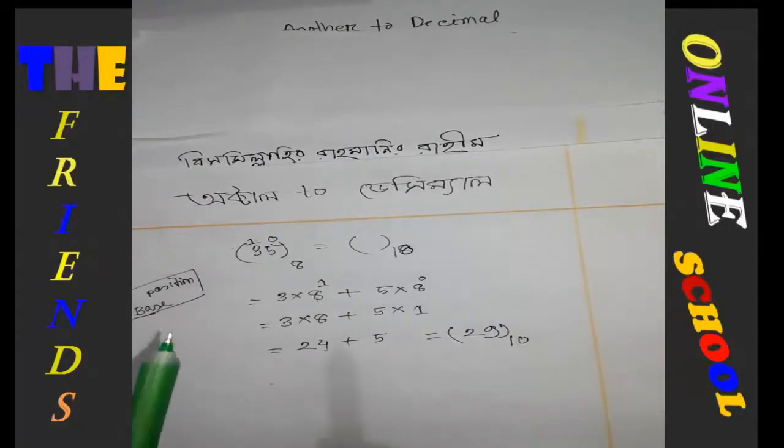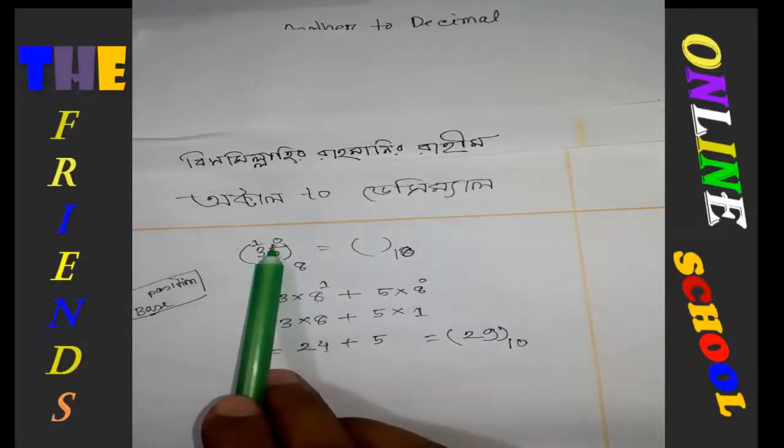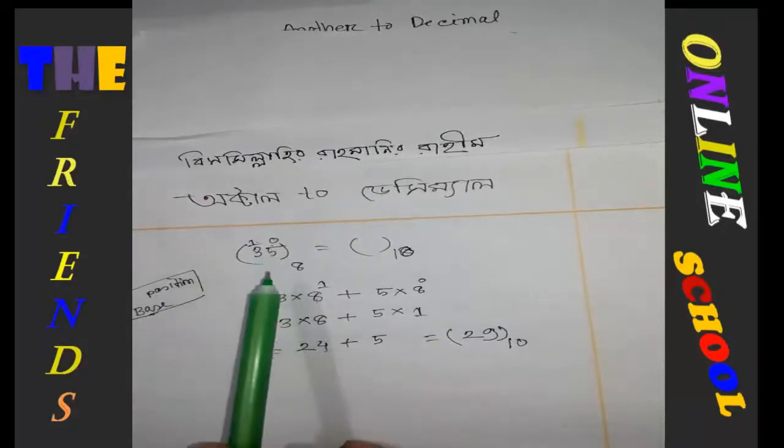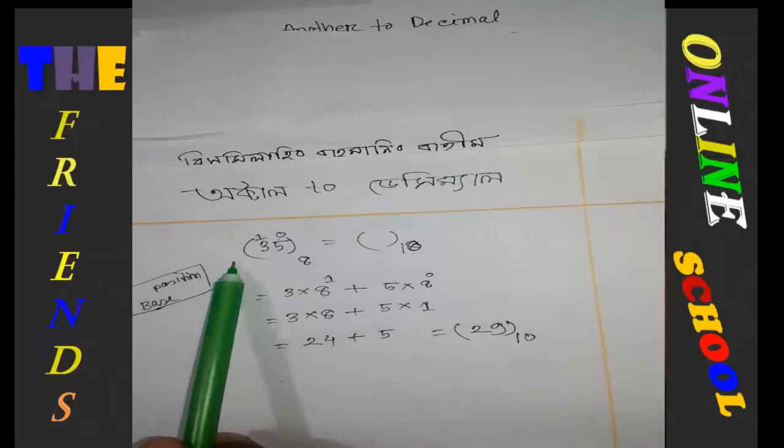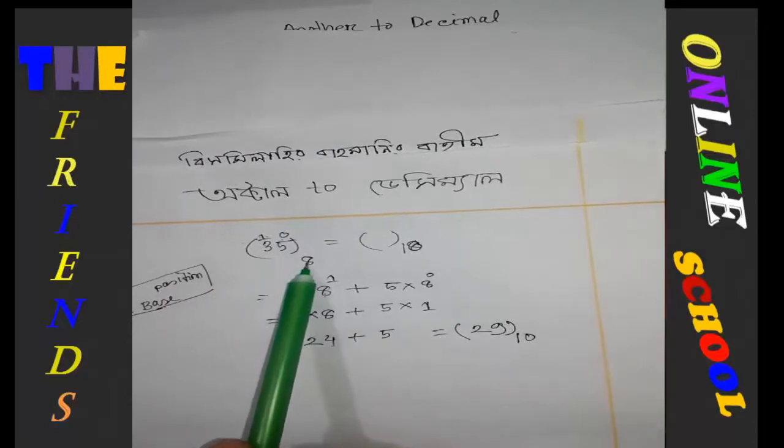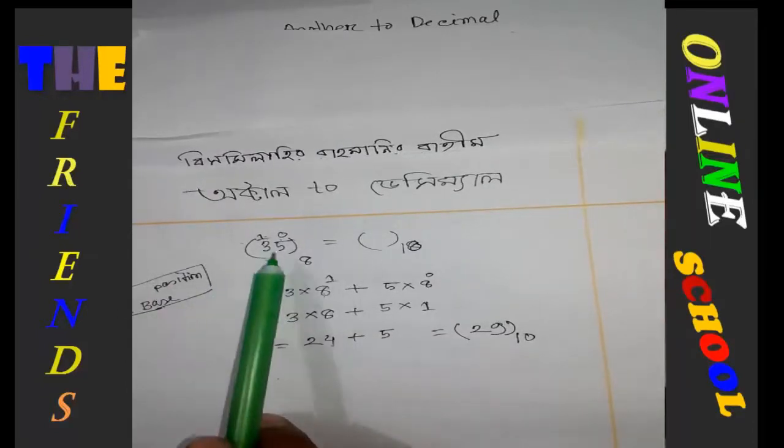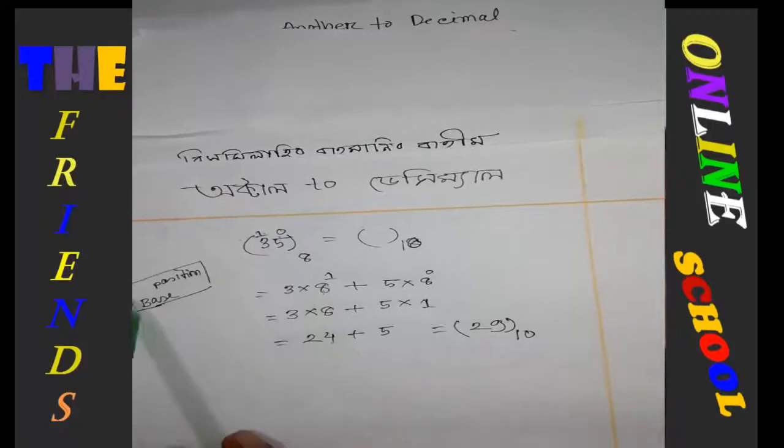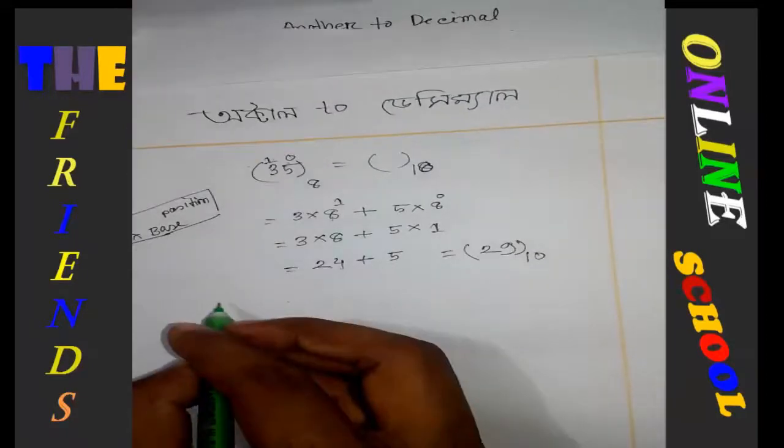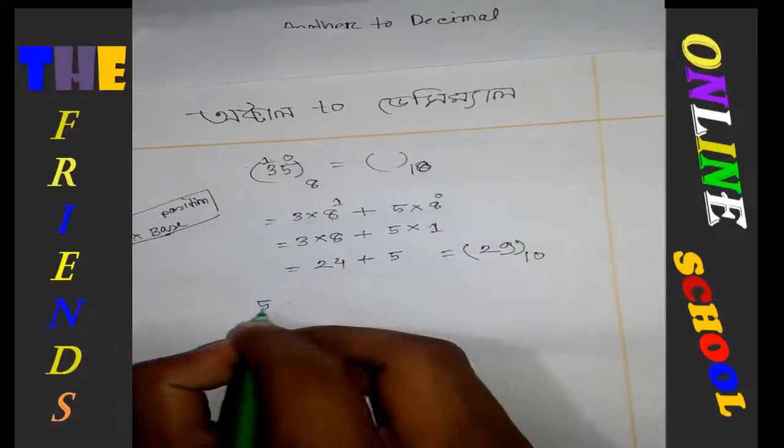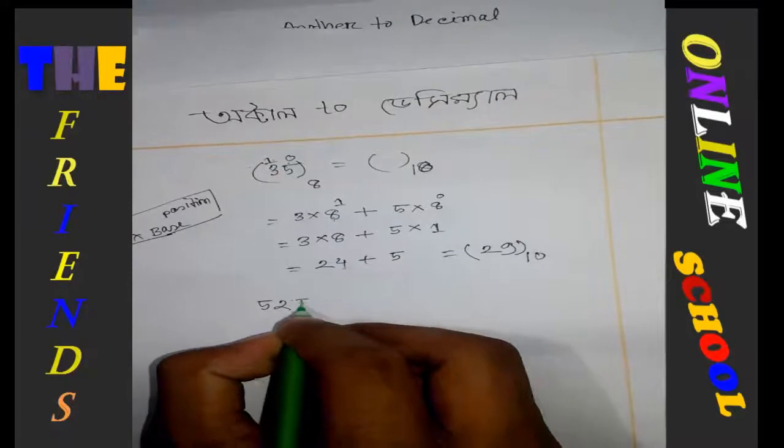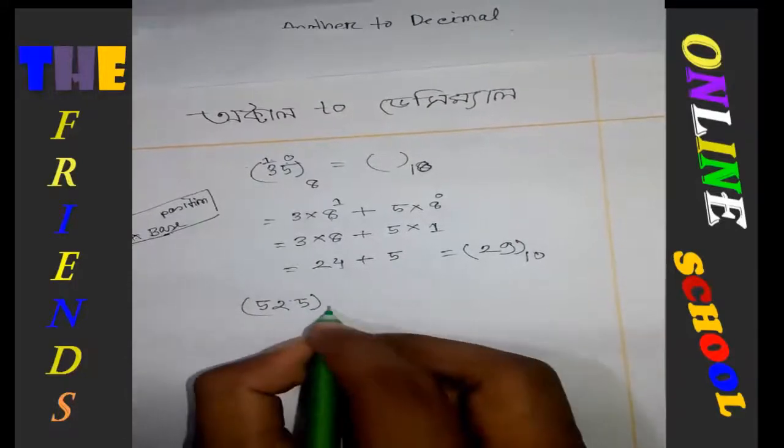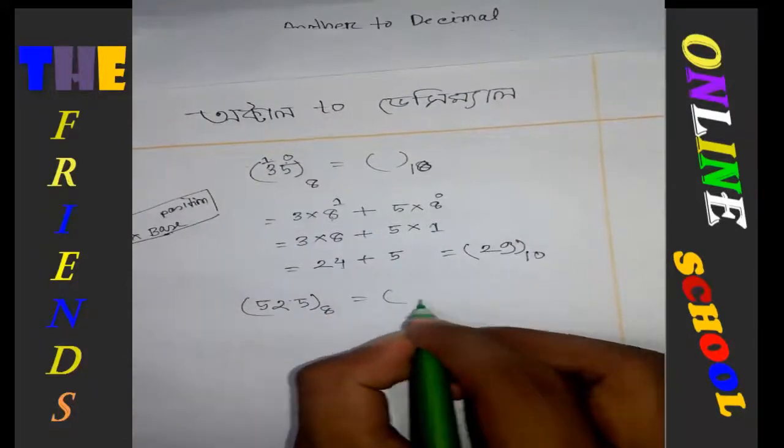This is the formula. You identify the position, the digits (3 and 5), the positions, and the base. This is the formula you can use. Next example.